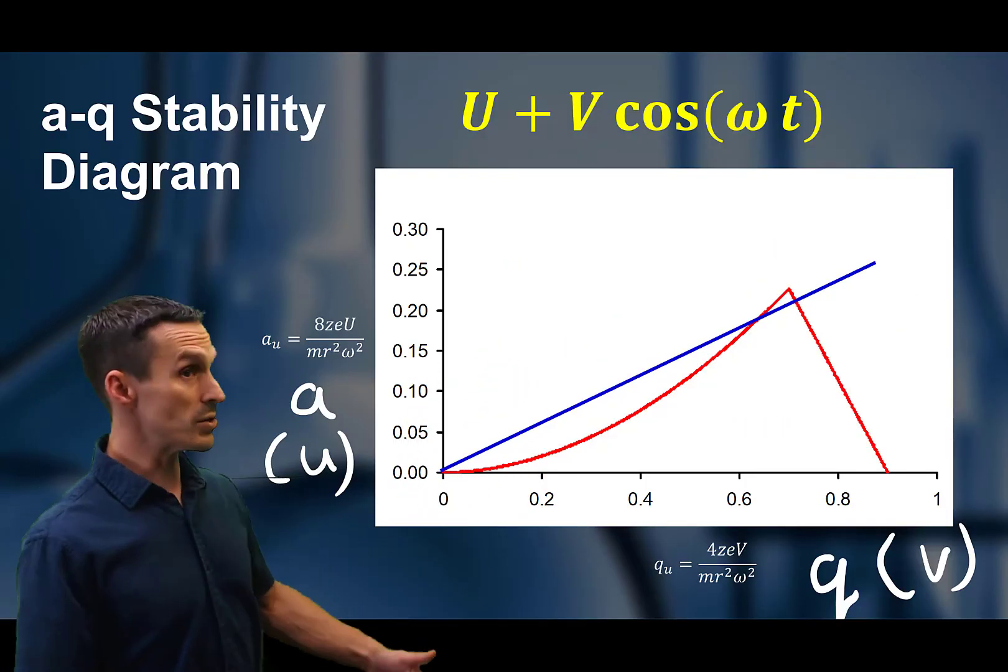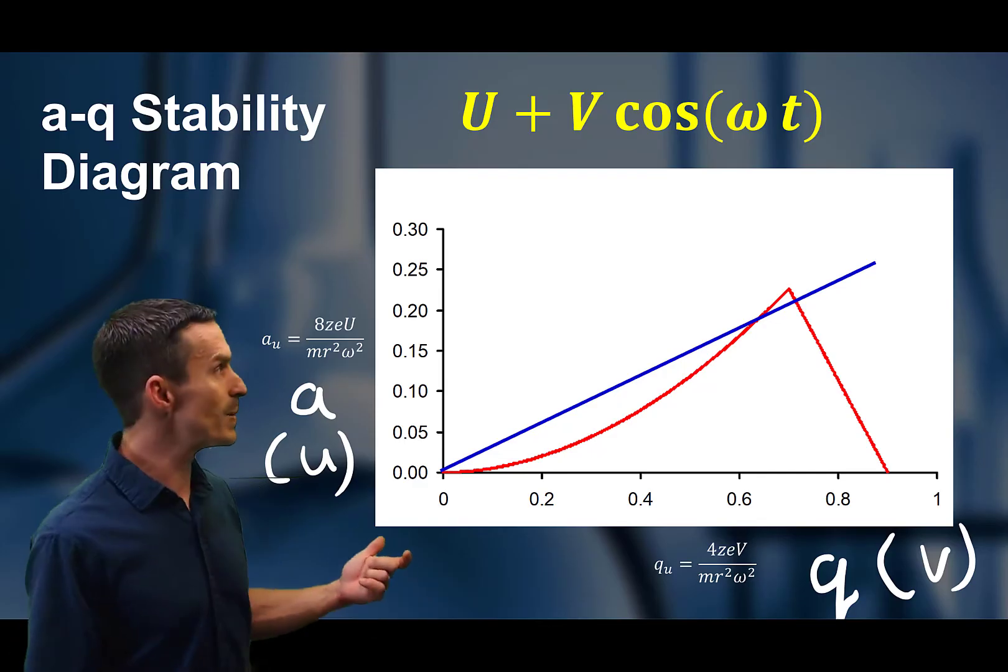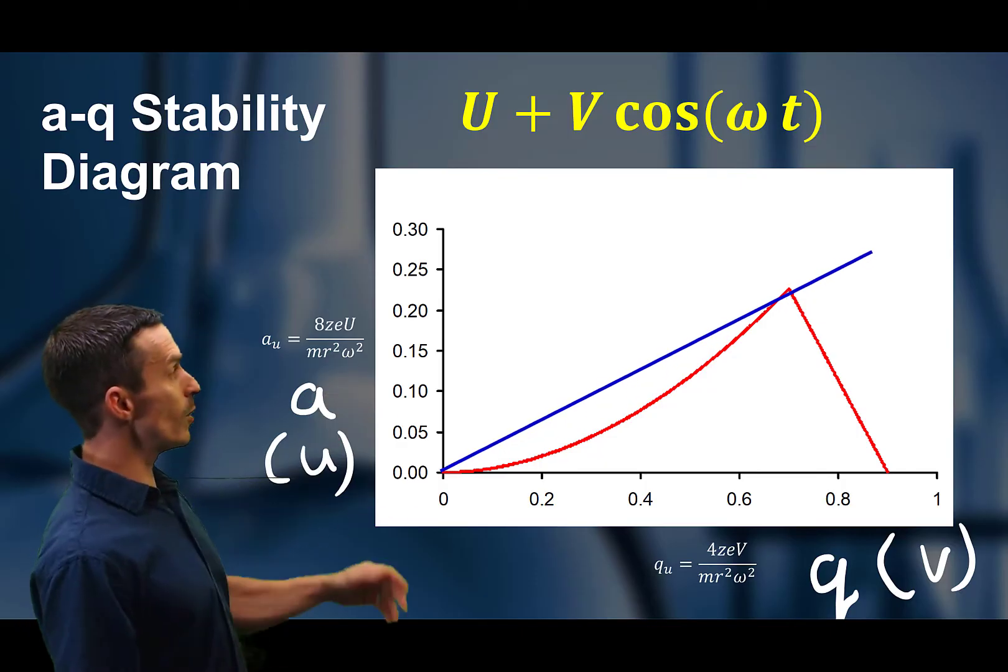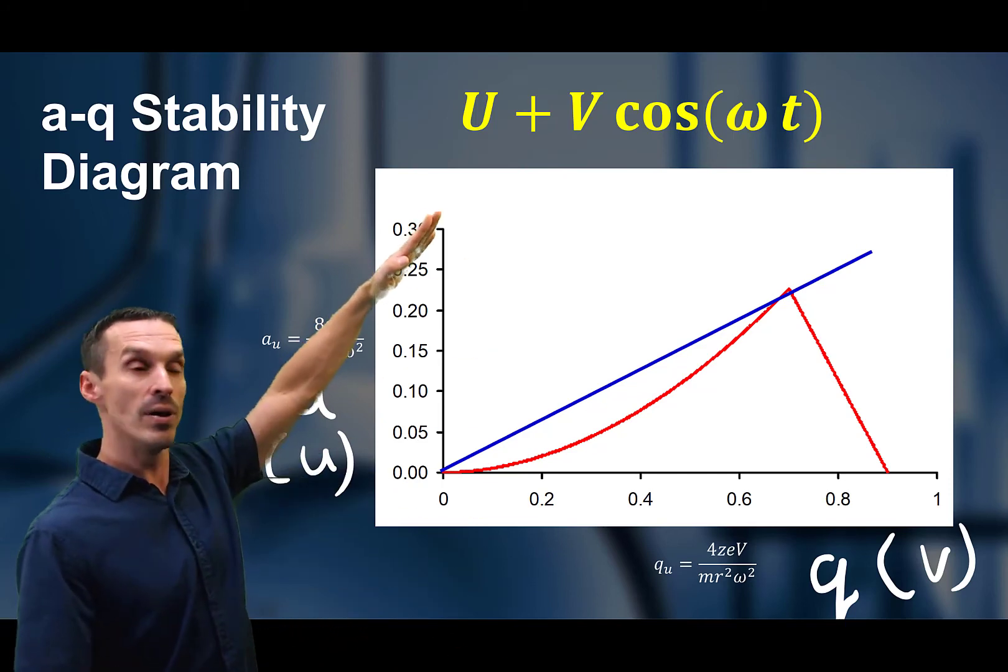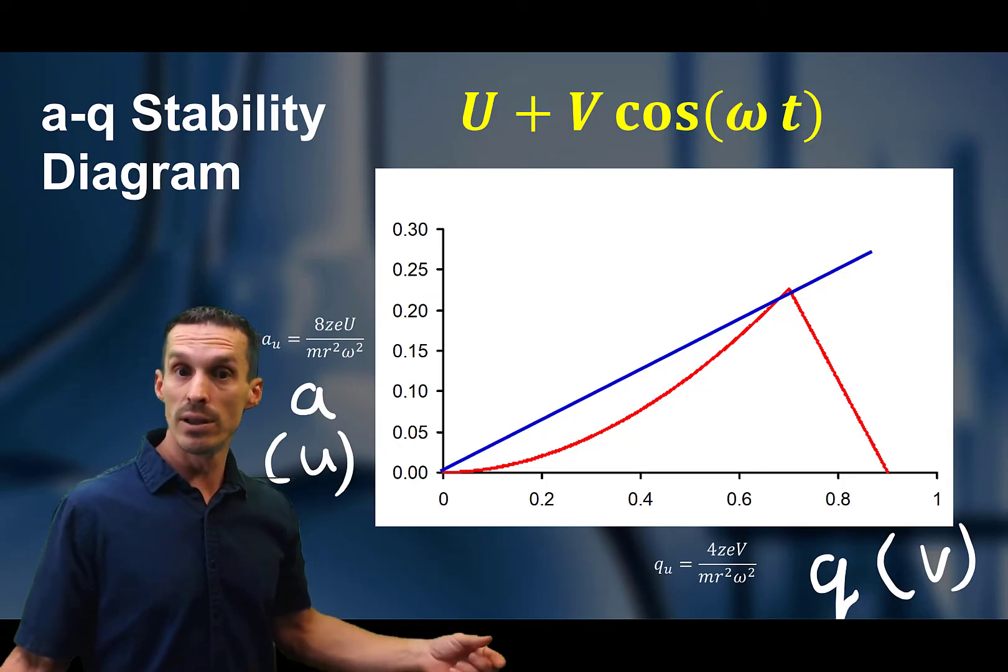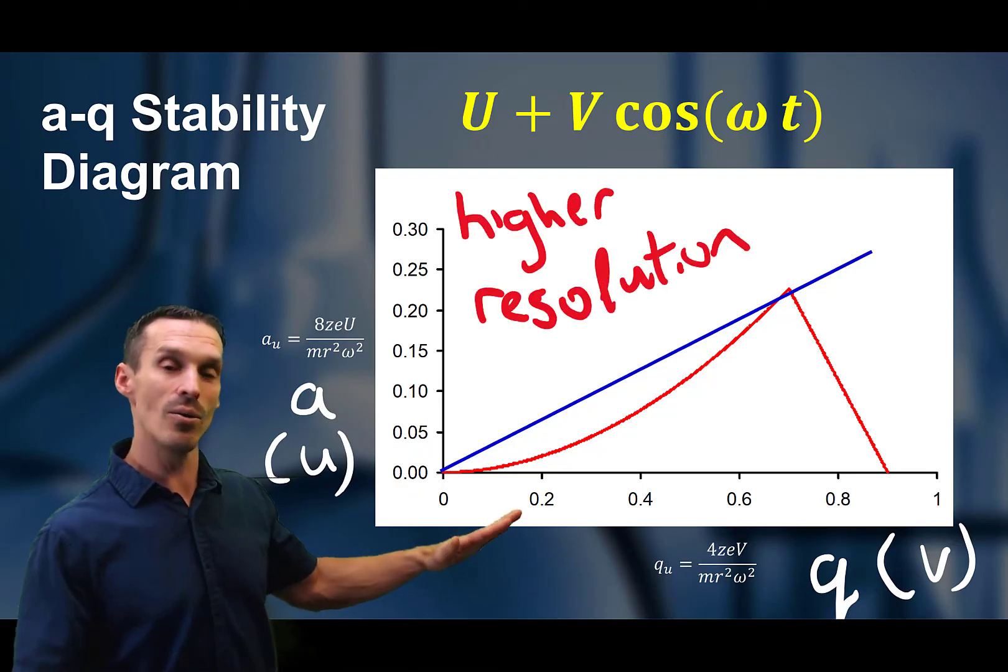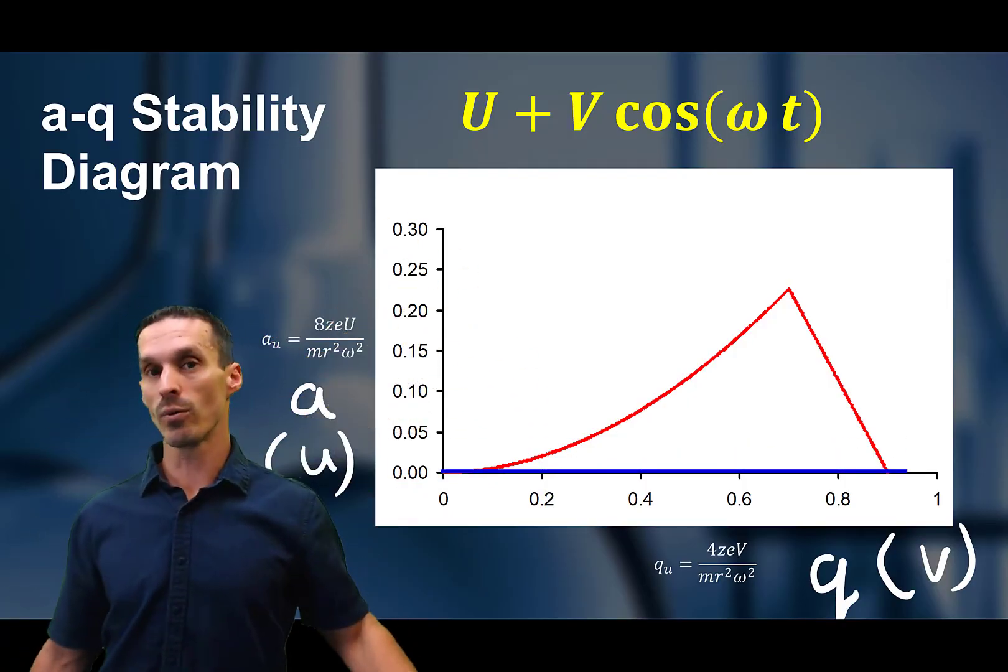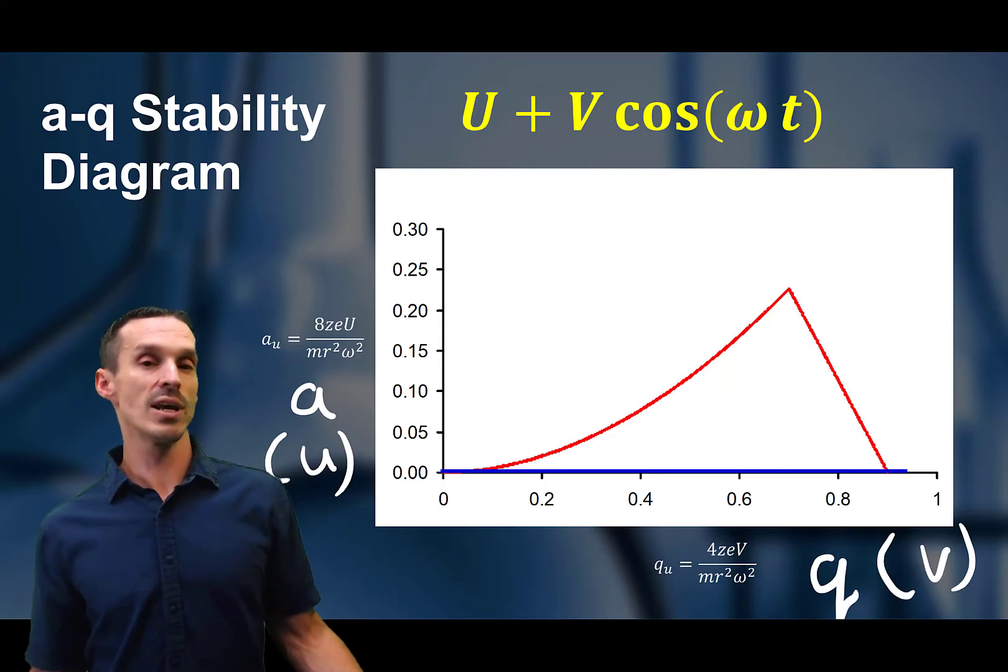Now the other thing you can do here is you can actually play with the parameters a little bit. So if I wanted to control the resolution, the resolution is basically how much of that line sits inside the stable region. So I can change the slope of that line. I'll do that by increasing U relative to V, and the slope goes up. So now, because it's only crossing just at a tip of that iceberg, the resolution is higher, the mass window is smaller. So I can change that resolution. I can go the other way, and I can go the extreme on the other way where the curve actually lies flat. When we do that, what we've done is we've set the magnitude of U, the a term, to zero. Or another way of saying this is that this is RF only.